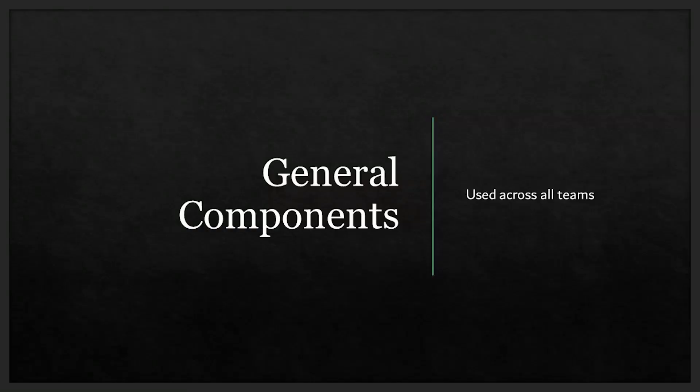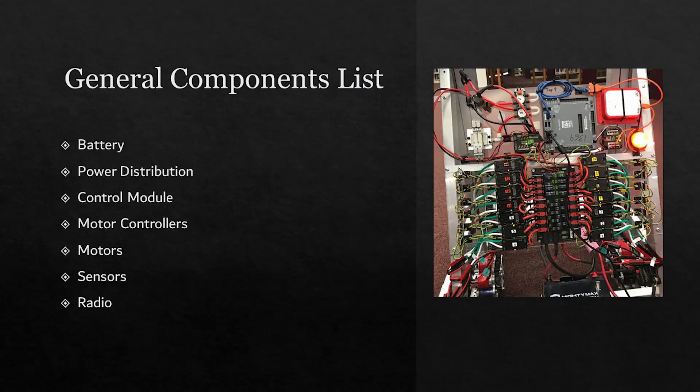Here is our first section, which covers the general components. They are components that are similar and serve the same purpose through each team. Here is a general list of most of the components that make up the electronics system in our robot.